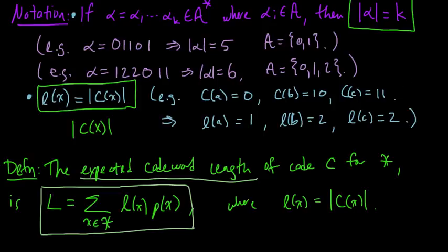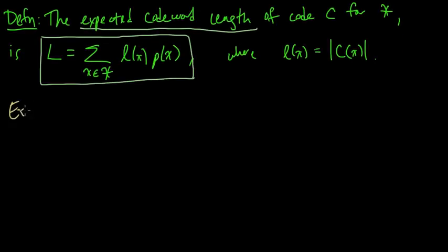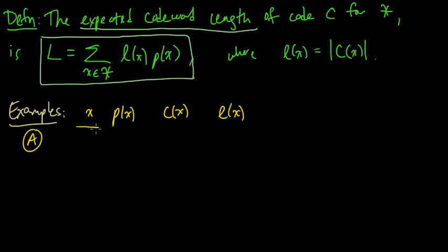So let's do a couple examples. So let's look at our running examples of some different codes, and let's see what the expected codeword length is for those. So we'll just make a little table here. So x, each source symbol, its probability, the code word, and the length of that code word.